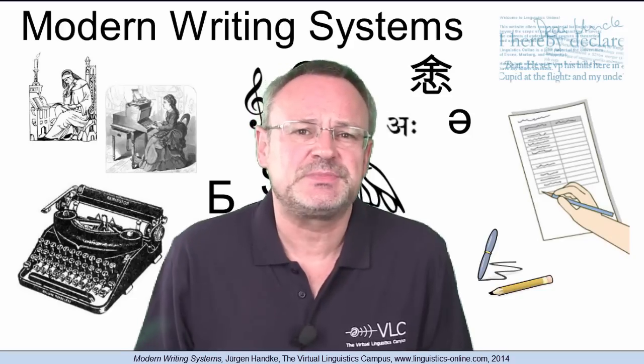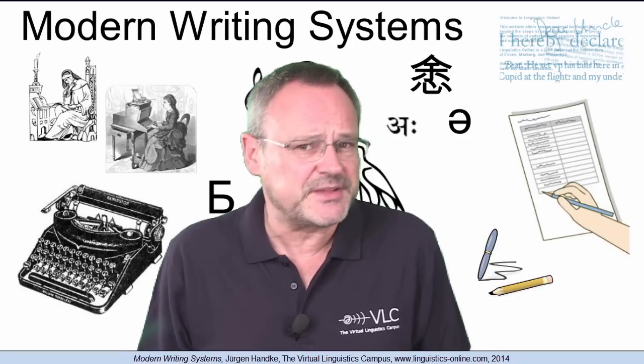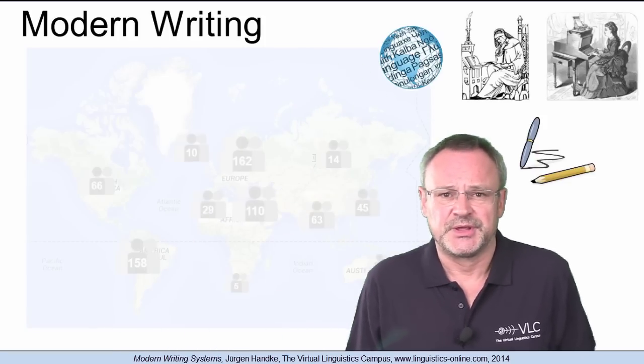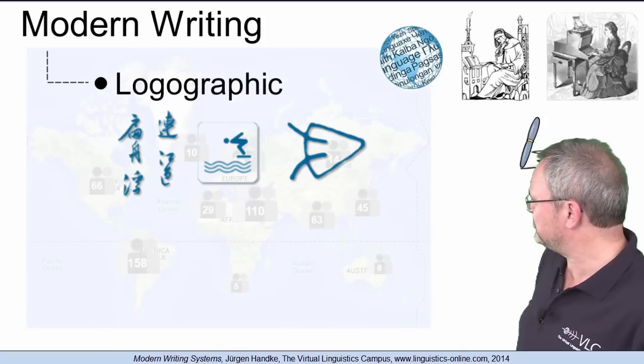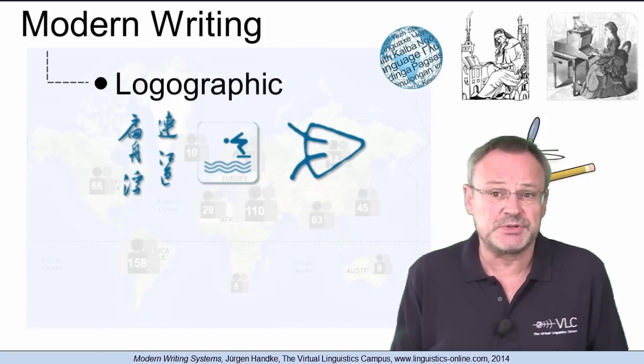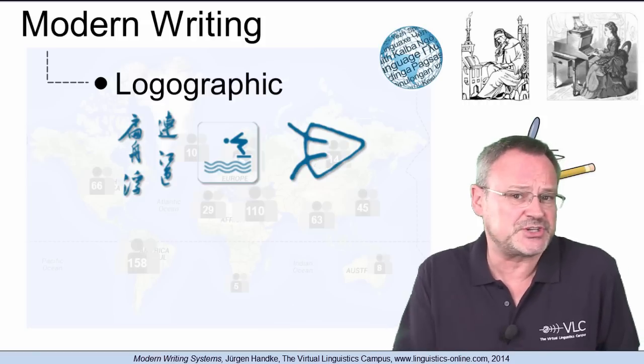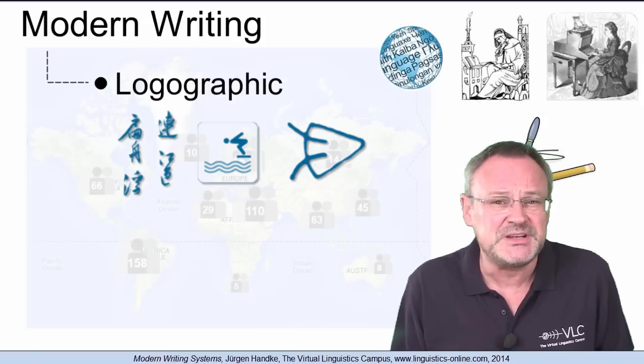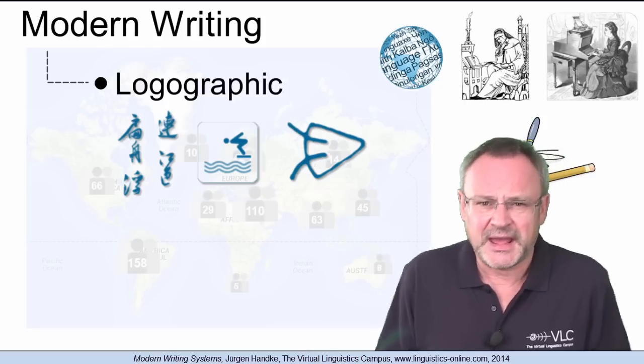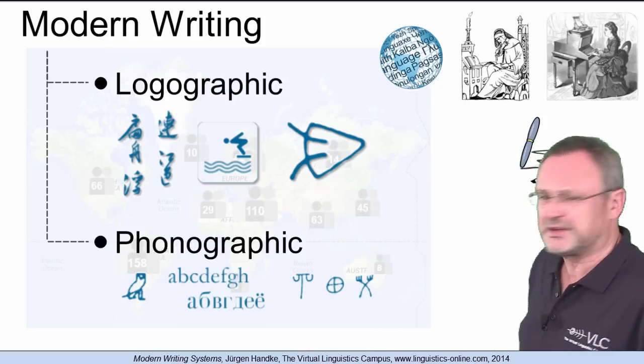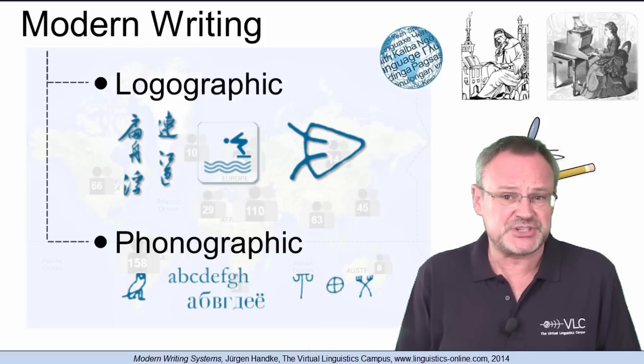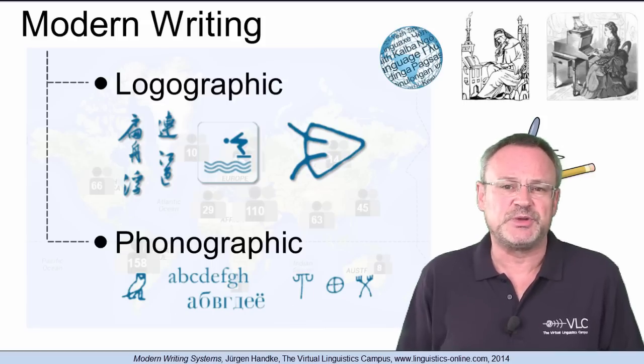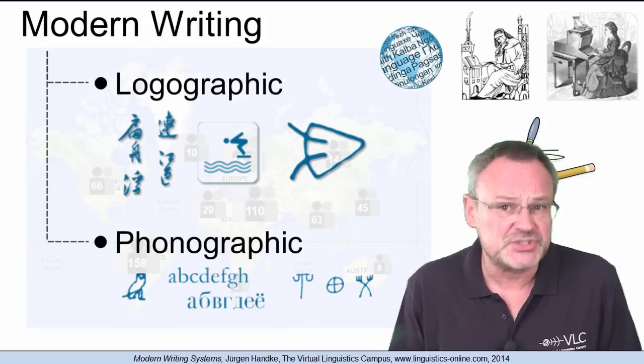They emerge from symbols that represented animals and other images and can be divided into two central branches: logographic writing systems, whose symbols represent words or concepts where the shape of the symbol is often closely related to the meaning of the respective concept, and phonographic writing systems, which establish some sort of relationship between the written symbol and its pronunciation.